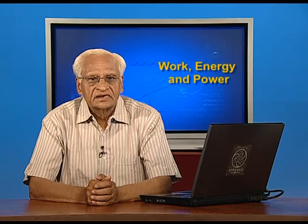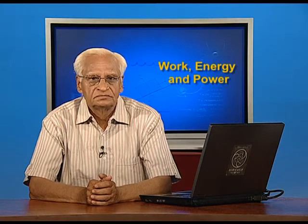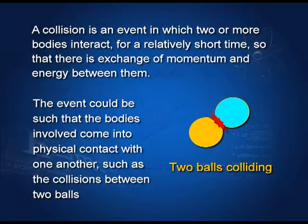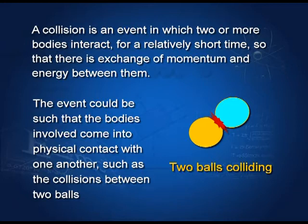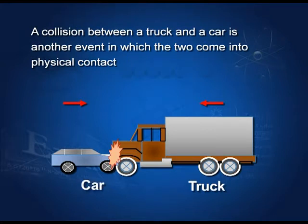Collisions may be thought of as an application of the conservation of linear momentum. A collision is an event in which two or more bodies interact for a very short time and exchange energy and momentum. The event could be such that the two bodies actually collide — they come and collide with one another — as with two balls touching, or a collision between a truck and a car where the two bodies come into contact.